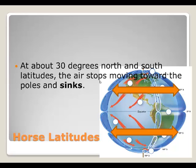The horse latitudes were named by sailors because when they got into these regions, the wind was so light that their ships did not move very fast. Sailors didn't supply ships with enough food for long delays at sea, so to make the ship lighter they had to throw things overboard. The heaviest and easiest things to discard were horses, so the horses were thrown into the sea so the boats would become lighter and move better.